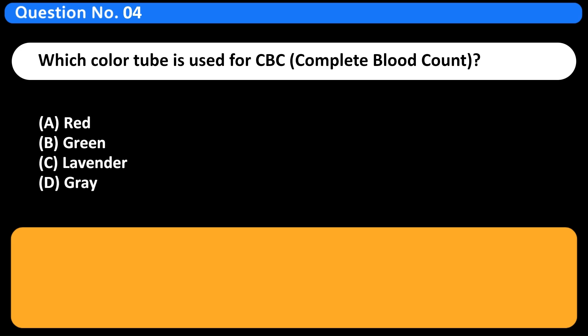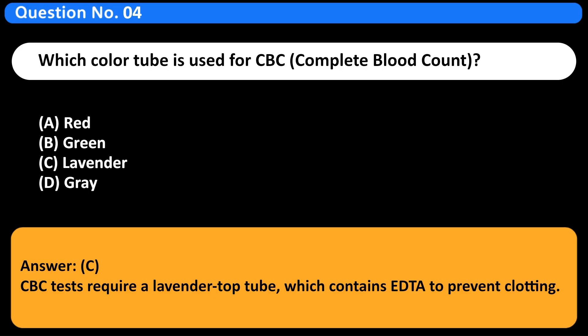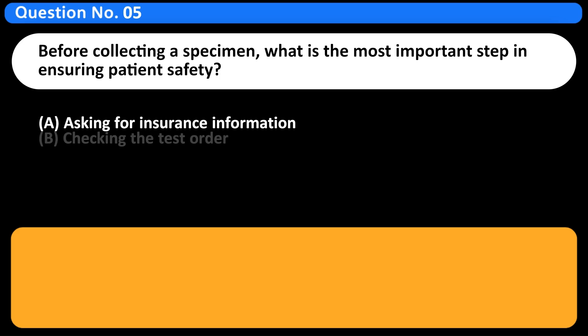Which color tube is used for CBC, complete blood count? A. Red. B. Green. C. Lavender. D. Gray. Answer C. CBC tests require a lavender top tube, which contains EDTA to prevent clotting.